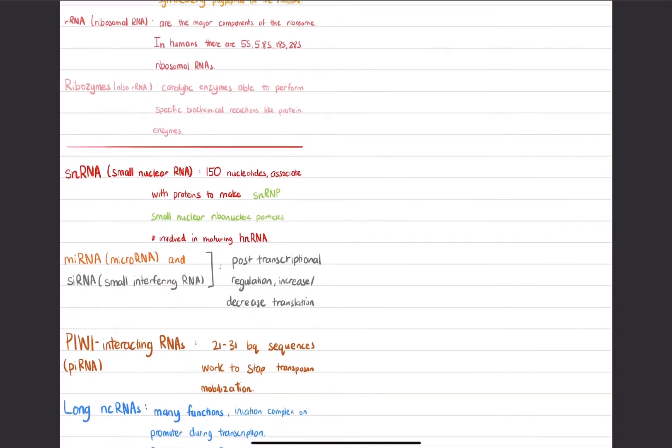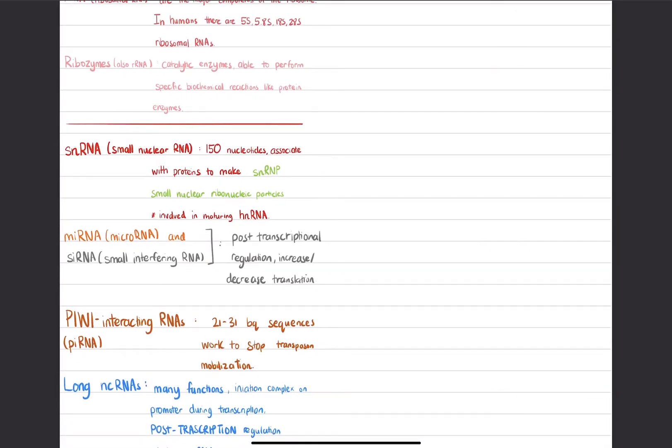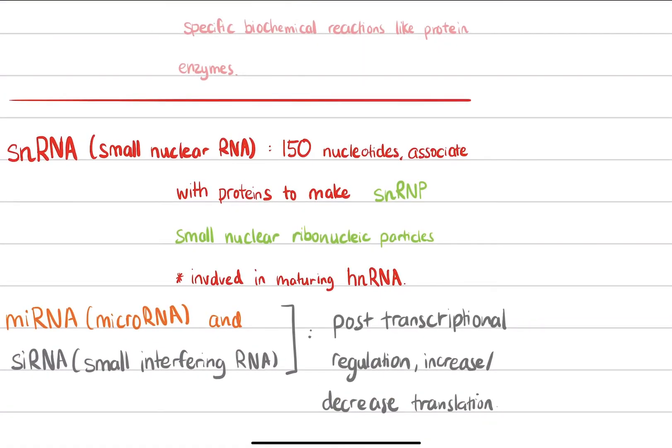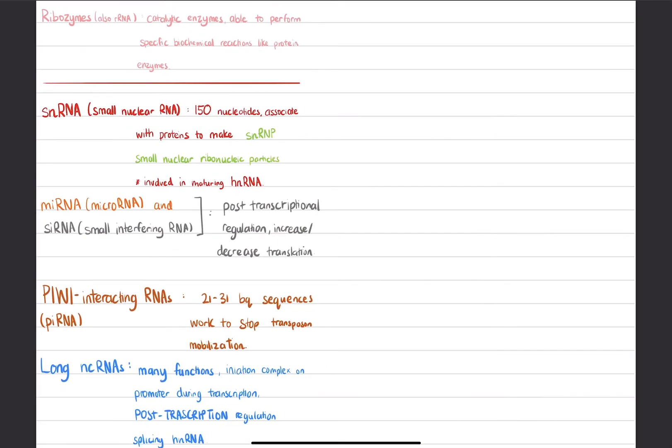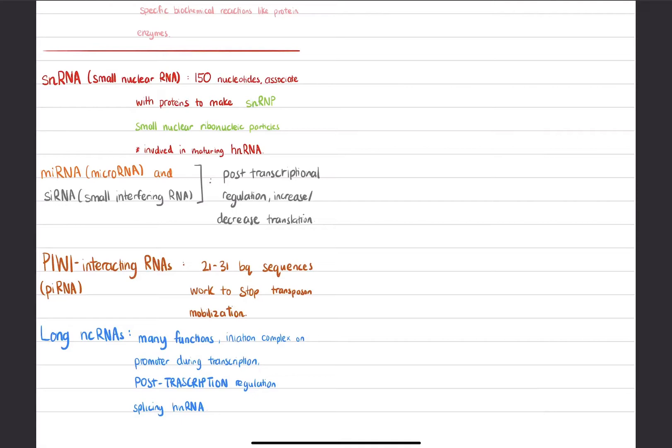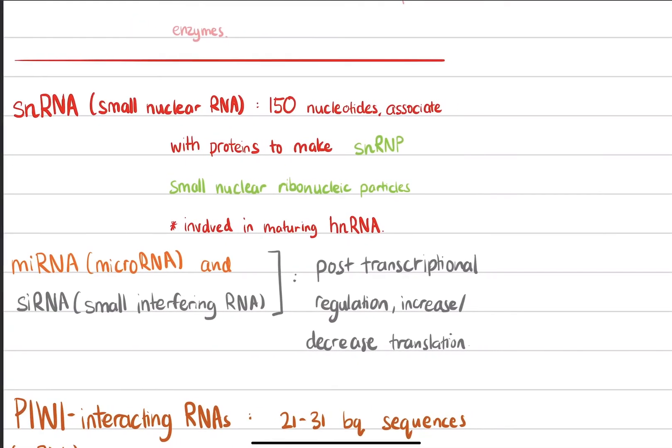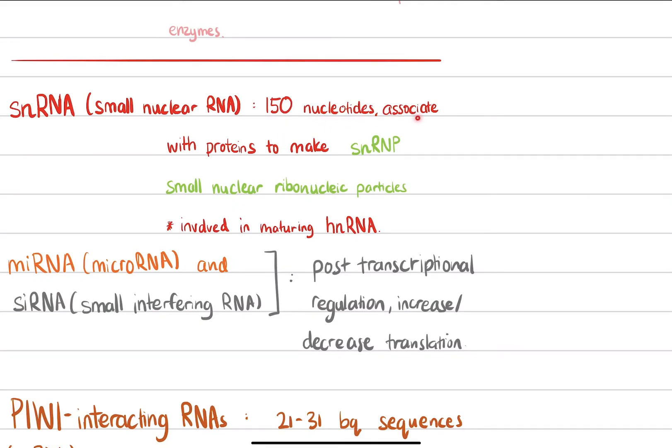There are other kinds of non-coding RNAs. We have small nuclear RNA, which is made up of 150 nucleotides. You don't need to memorize this, but it's good to have an understanding of what they are, because when you see them in future videos, you'll understand what they're doing.